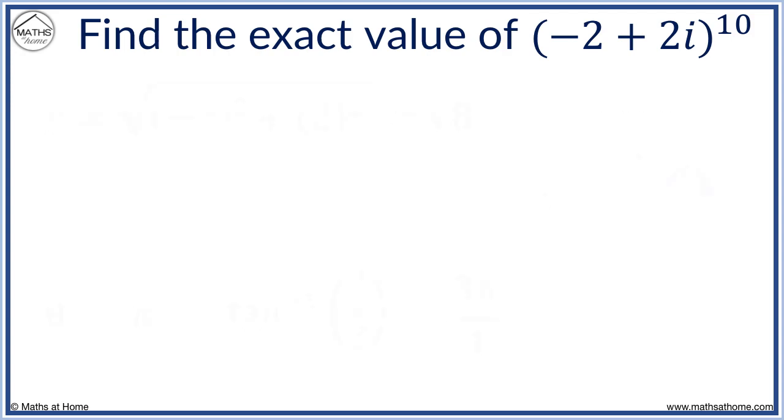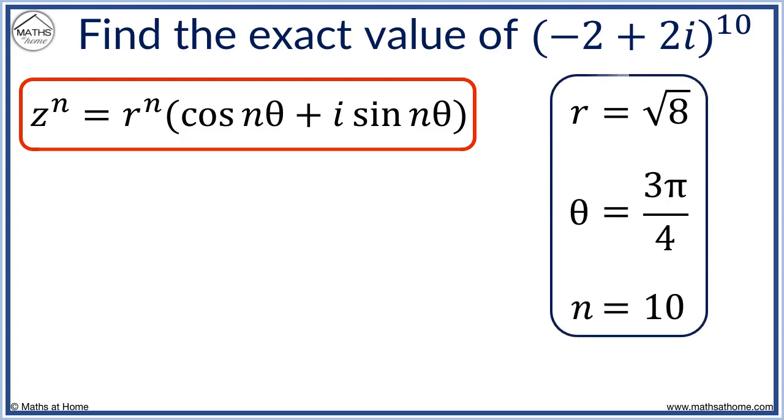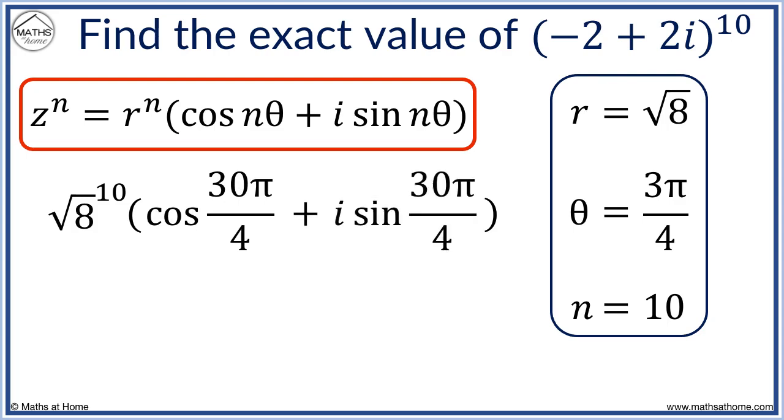We use de Moivre's with r equals root 8, theta equals 3 pi over 4, and n equals 10. We obtain root 8 to the power of 10. n times theta equals 30 pi over 4. So we have cos 30 pi over 4 plus i sine 30 pi over 4.